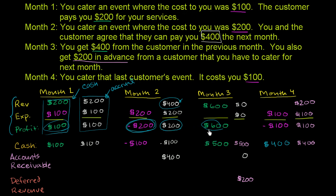Let's go to month three. On the cash basis, looking at the example, you actually did nothing in month three — you could have gone on vacation, there was no actual catering done. But on the cash basis, it looks like this was your best month of catering ever, because you got $600 inflow in cash and didn't have to spend any expenses. But when you do the accrual basis, it actually reflects what happened: you had no revenue and no expenses associated with that revenue.